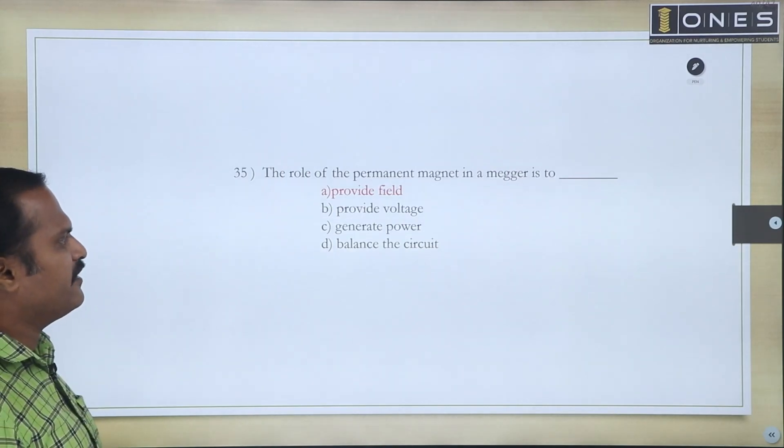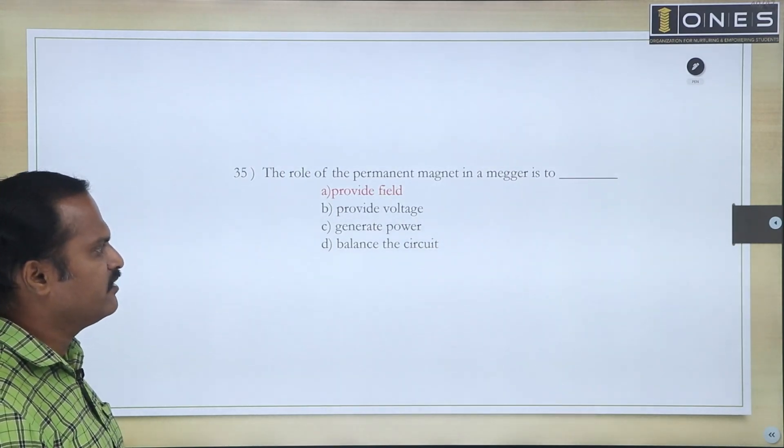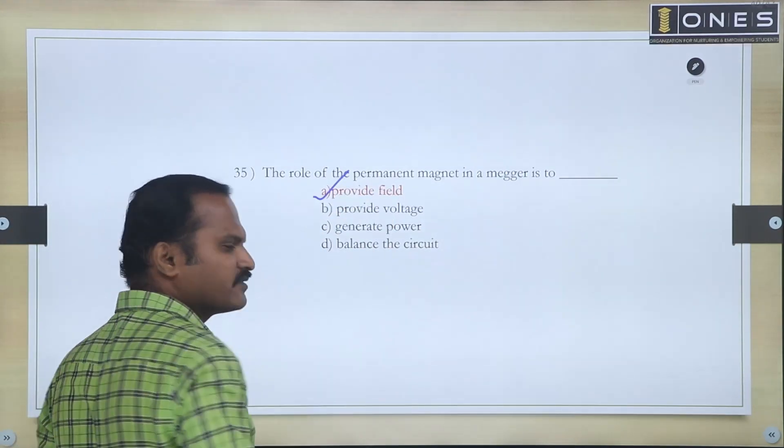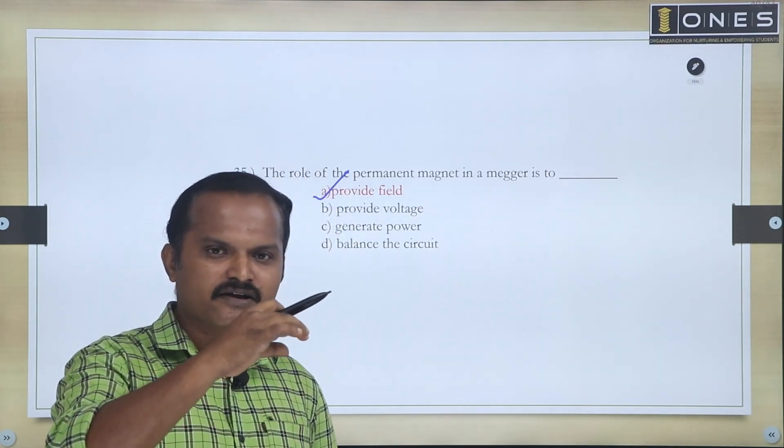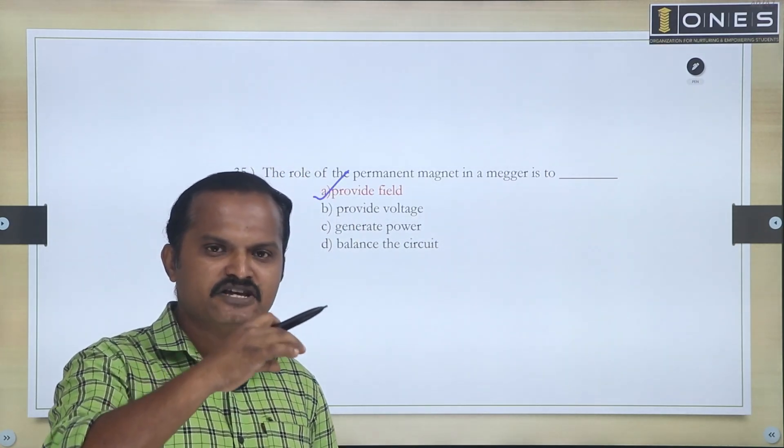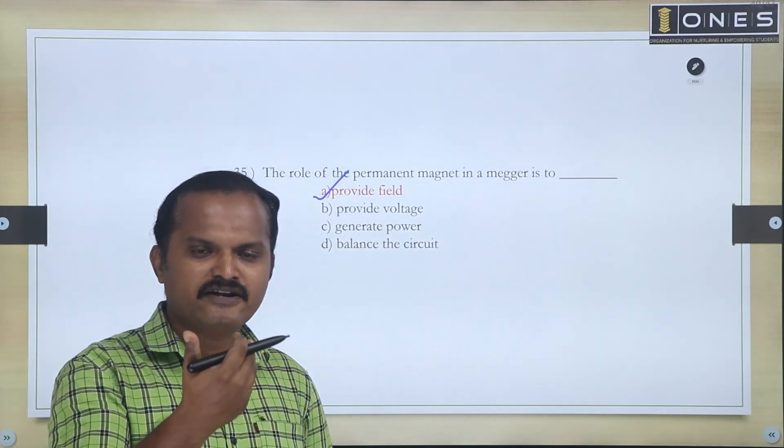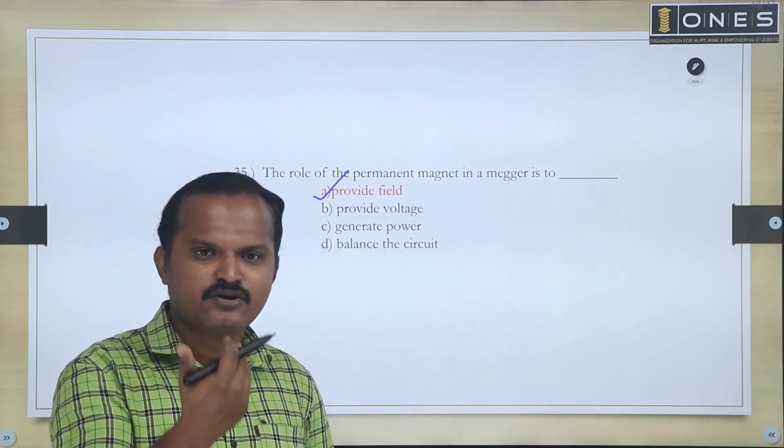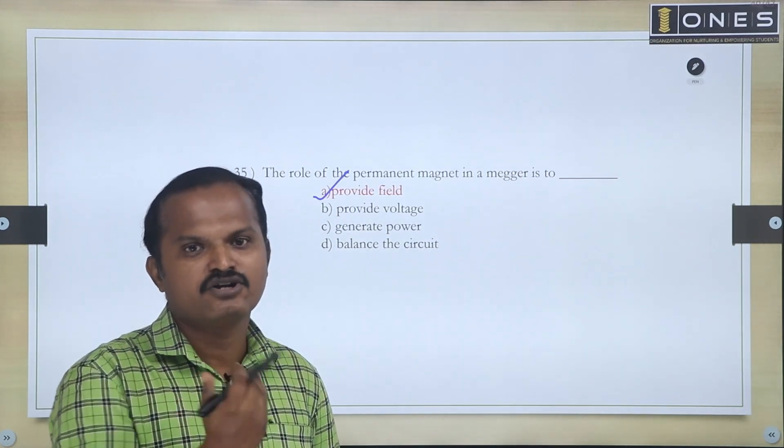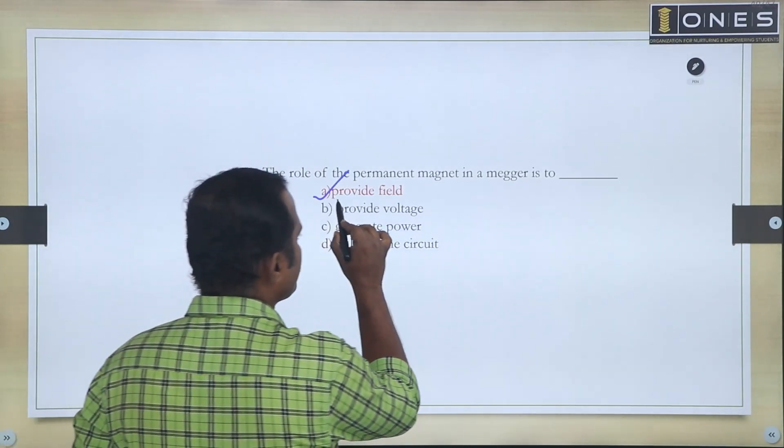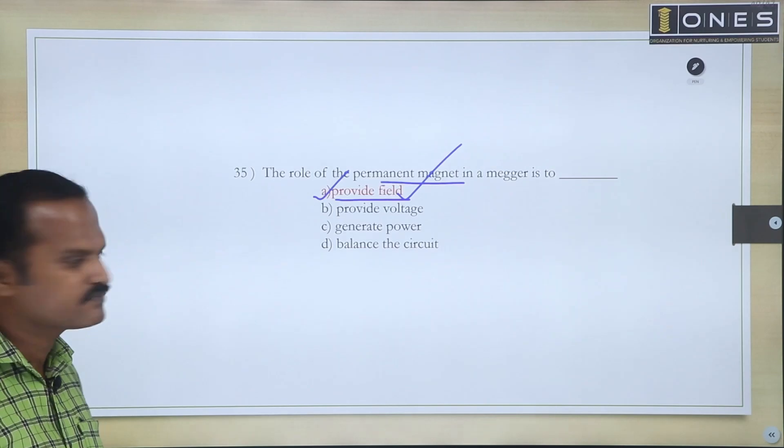Next question: The role of permanent magnet in the Megger. The permanent magnet function is mainly used to provide a field. We have two coils, C1 and C2. The permanent magnet is underneath. When current passes, automatically the coil will act as an electromagnet. The interaction between these two fields causes torque to develop. So the main purpose of your permanent magnet is to provide a field.